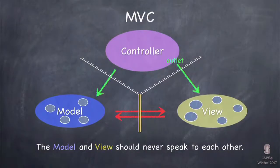The model and the view can never speak to each other — there's a double orange line, no crossing either way. This makes perfect sense because the model is completely UI-independent, and the view is completely UI — that's all the view is. They have nothing to talk about. It's up to the controller to manage communication between these two.